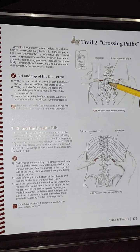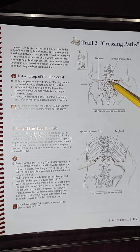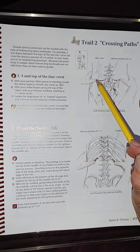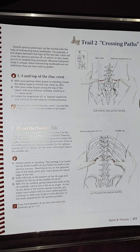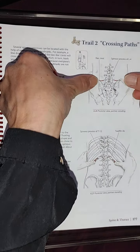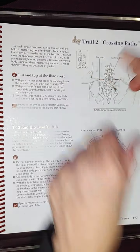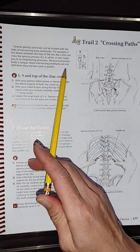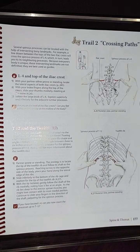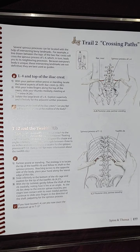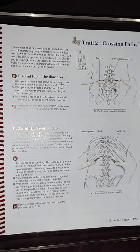As you can see here, the spinous process of L4 and this is the iliac crest. So from the iliac crest, you can go ahead and feel — I'll palpate that. Several spinous processes can be located with the help of intersecting bony landmarks. For example, a line drawn between the tops of the two iliac crests will cross the spinous process of L4, which in turn leads you to its neighboring processes.